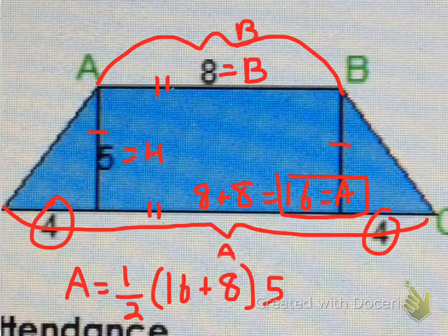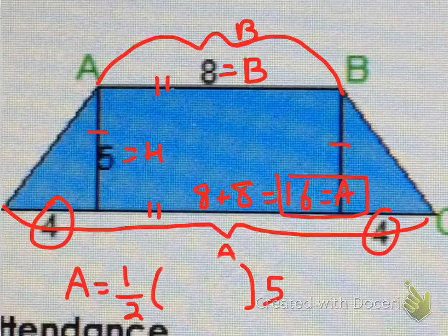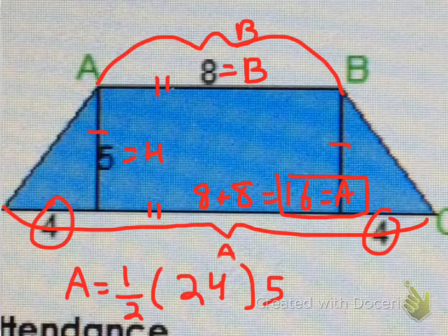So, we're going to have 16 plus 8 is 24, and half of 24 is going to give us 12.